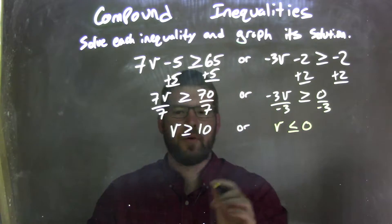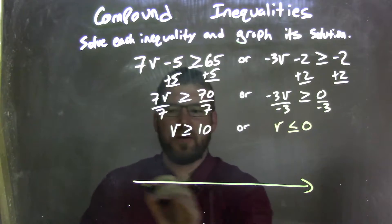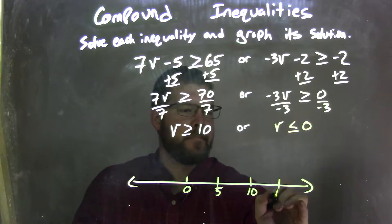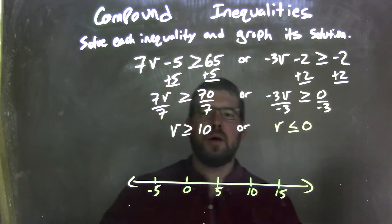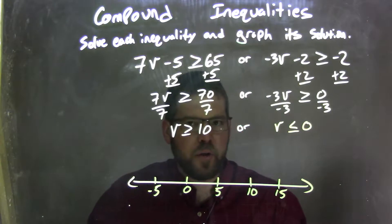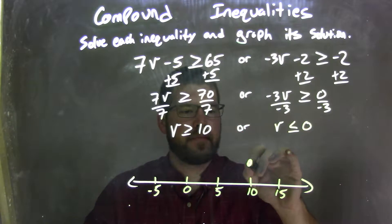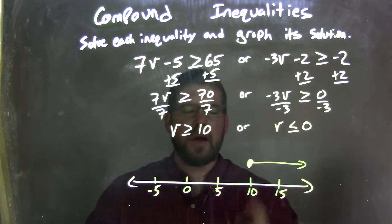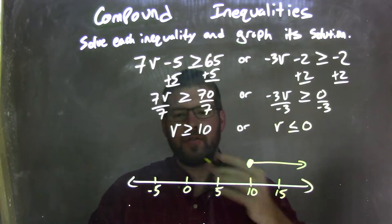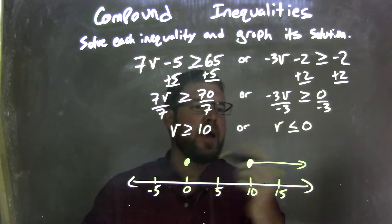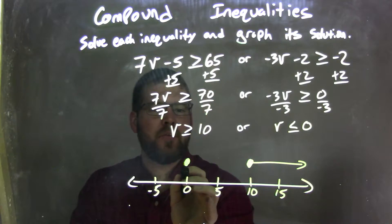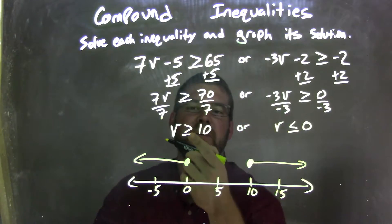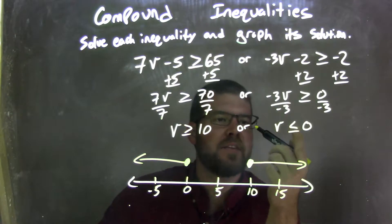Now I have my two inequalities, so I can graph them. Let's make a number line here with points at negative 5, 0, 5, 10, and 15. V is greater than or equal to 10, so I have a closed circle at 10, with an arrow to the right. The other one says V is less than or equal to 0, so at 0 I have a closed circle and an arrow to the left. Now we have our graph that matches our compound inequality: V is greater than or equal to 10, or V is less than or equal to 0.